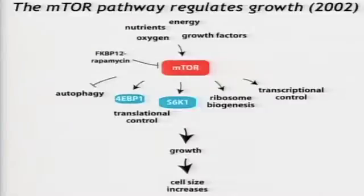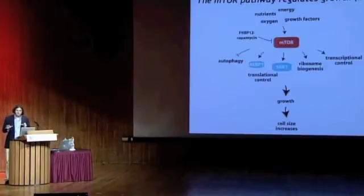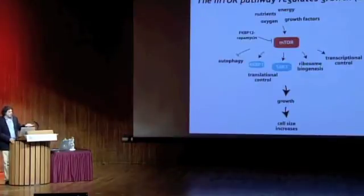Since 2002, we knew quite a bit about this pathway. We already knew that mTOR was the central component, perturbed by rapamycin. We knew that mTOR was a regulator of the balance between anabolism and catabolism — an inhibitor of catabolic processes such as autophagy, and a regulator of anabolic processes such as protein synthesis, ribosome biogenesis, and transcriptional regulation, which we now know is metabolism-driven, either through the HIF pathway or the SREBP pathway.